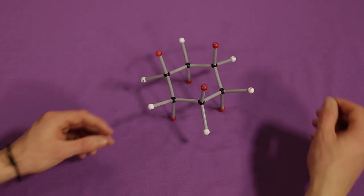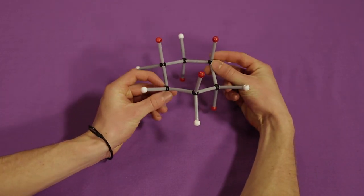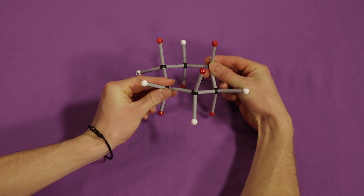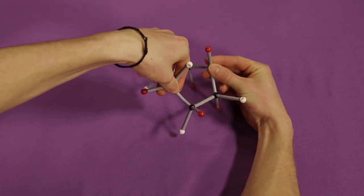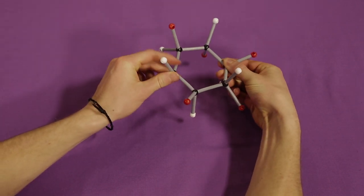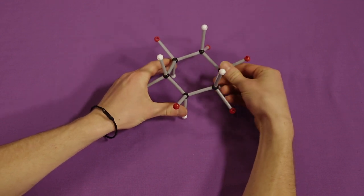Second way: take two carbon atoms directly opposite each other. Raise one of these atoms above the equatorial plane. Lower the other atom below the equatorial plane.